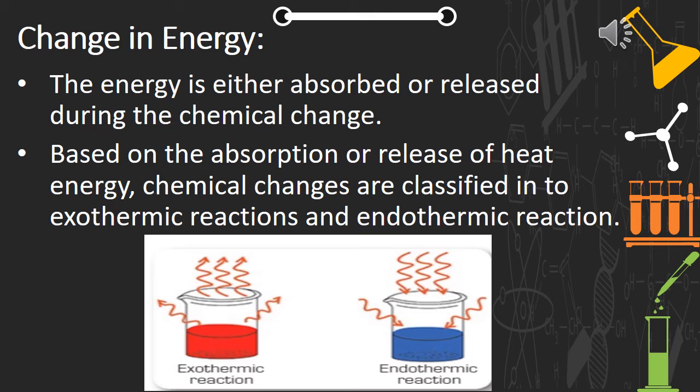Based on the absorption or release of heat energy, chemical reactions are classified into exothermic reactions or endothermic reactions. In the first diagram, the arrows are shown upward, meaning heat is released — that is an exothermic reaction. In the second diagram, the arrow is downward, meaning heat is absorbed — that is an endothermic reaction. We will see exothermic and endothermic reactions in detail further.